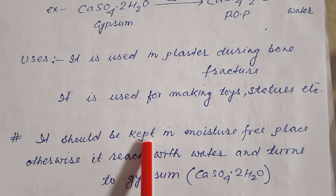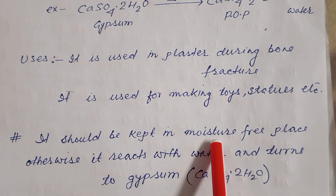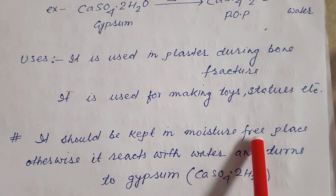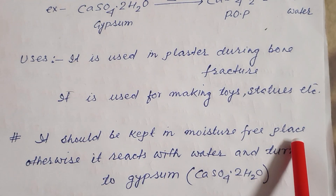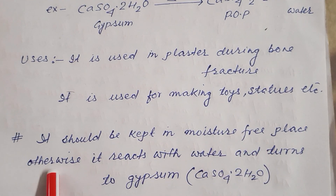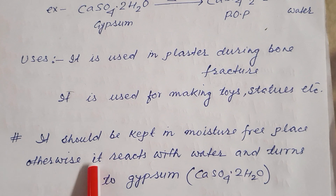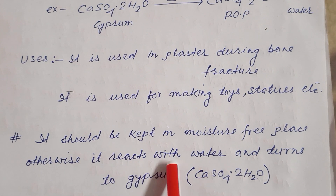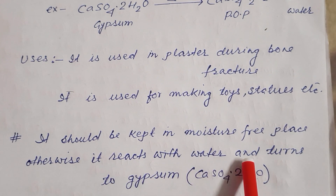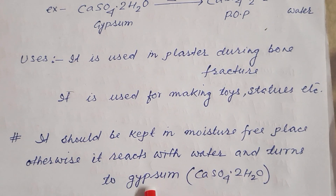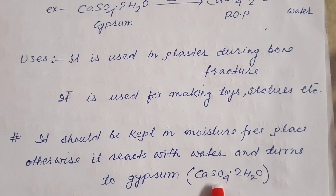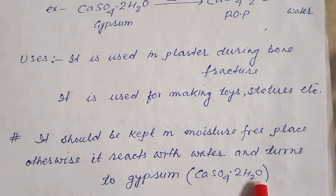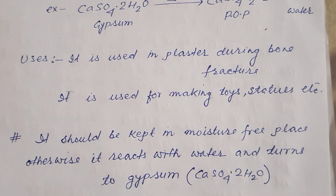It should be kept in a moisture-free place. Otherwise, it reacts with water and turns back to gypsum — calcium sulfate dot 2 H2O.